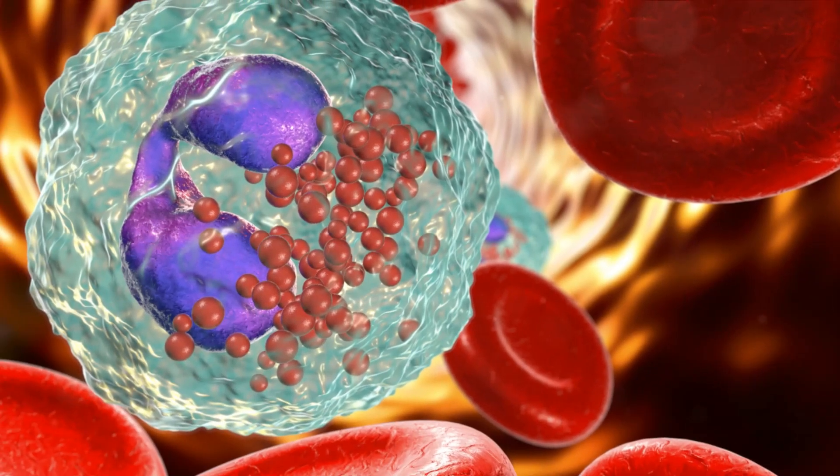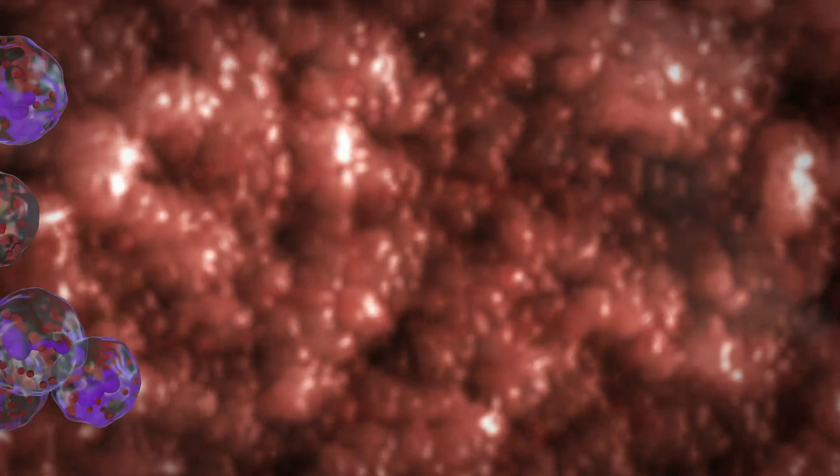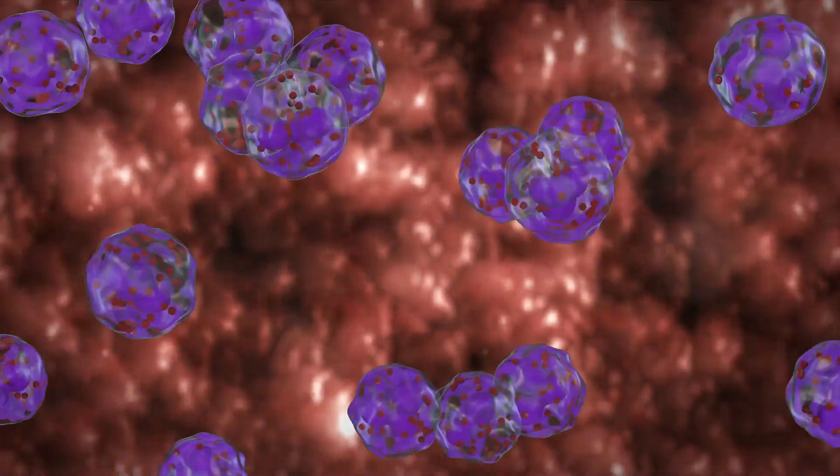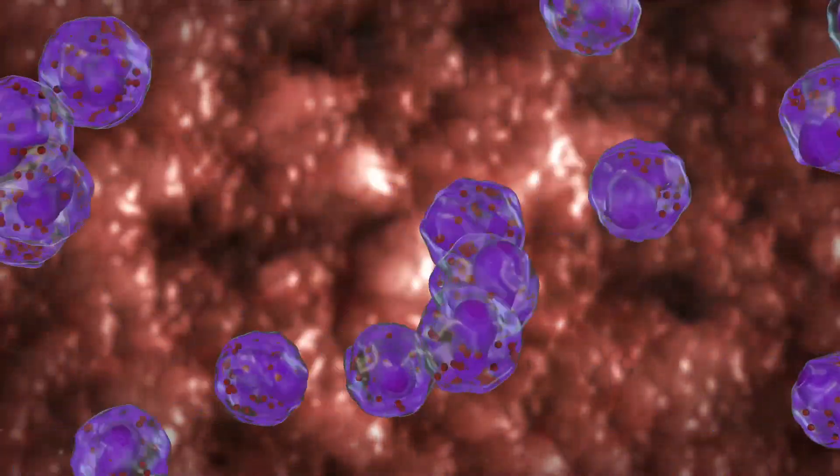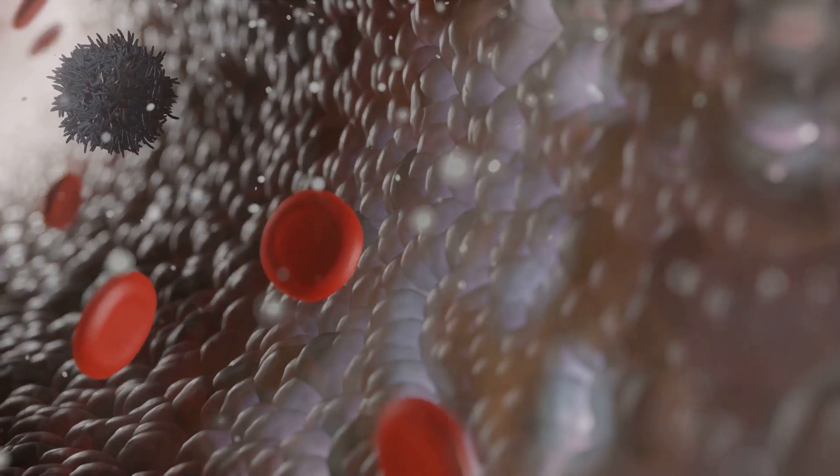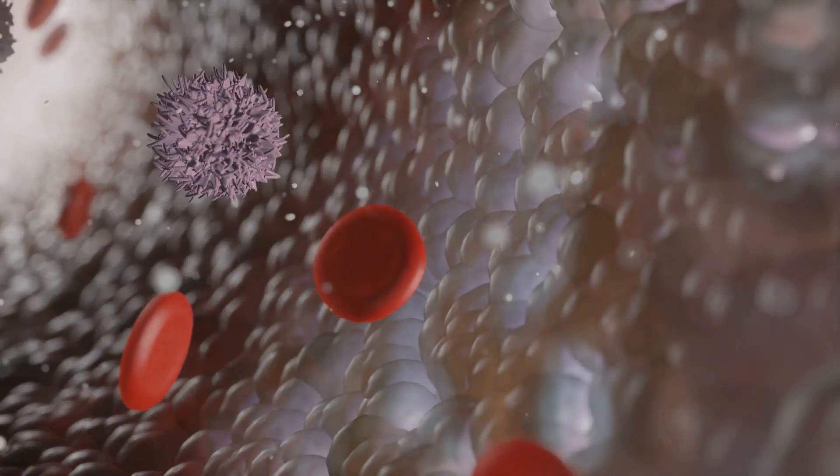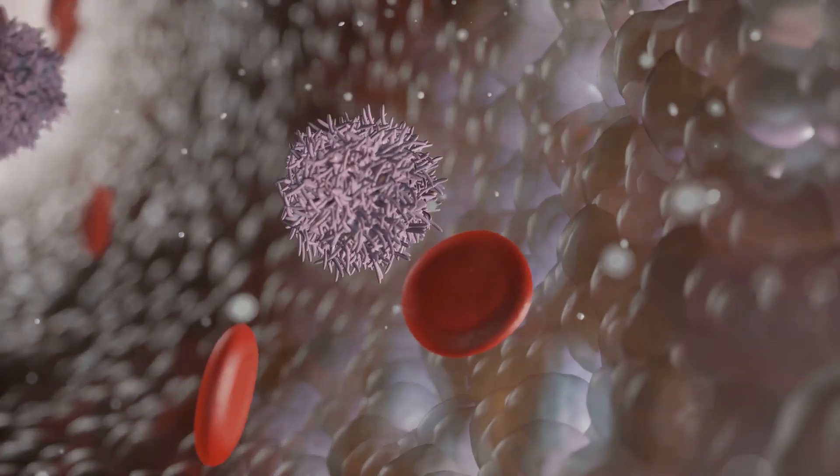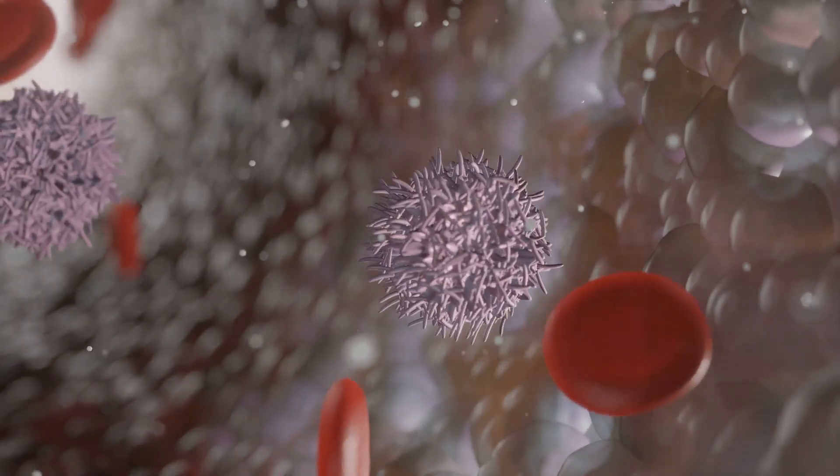Next, we have the eosinophils. These cells have a knack for tackling parasites. They release toxic substances that kill these unwelcome guests. But that's not all. Eosinophils also play a critical role in regulating allergic reactions, helping to control inflammation and prevent it from getting out of hand.